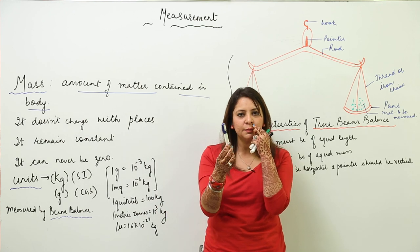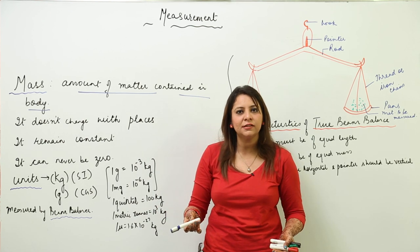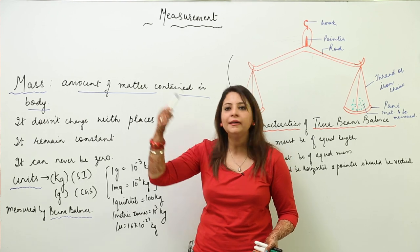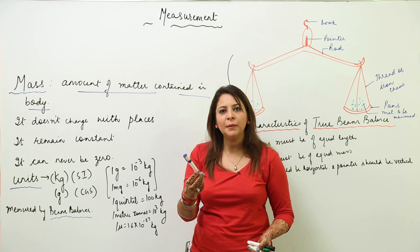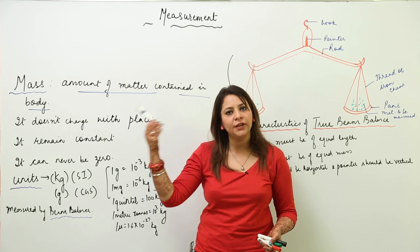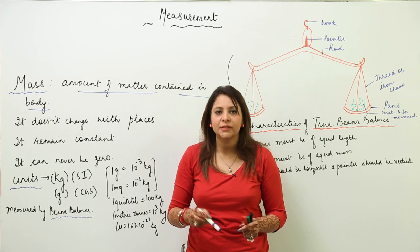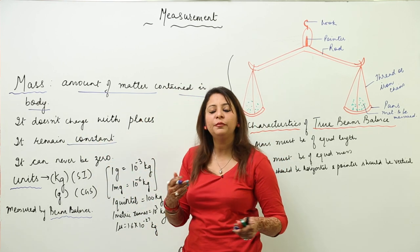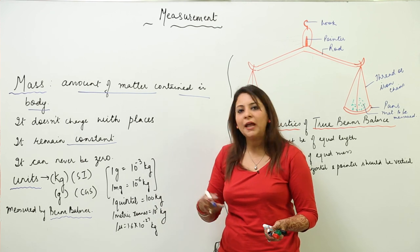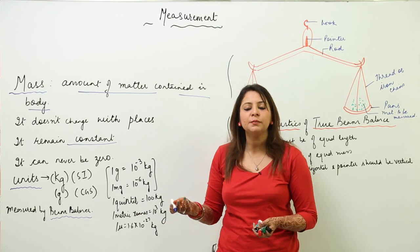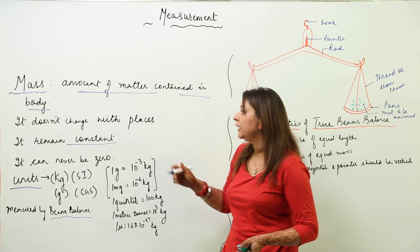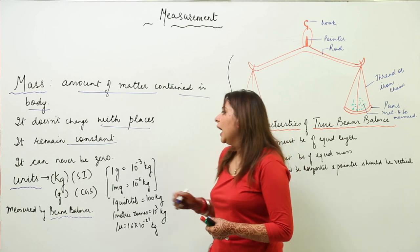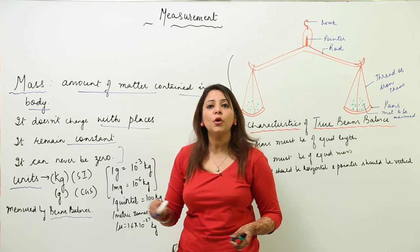Mass remains constant. Whether I measure the mass of this marker on Earth, on any other planet, in Chandigarh, or in Delhi — every time its mass is going to be constant. Mass does not change with place; it always remains the same no matter where you take the object.